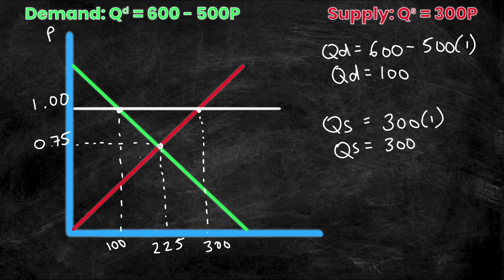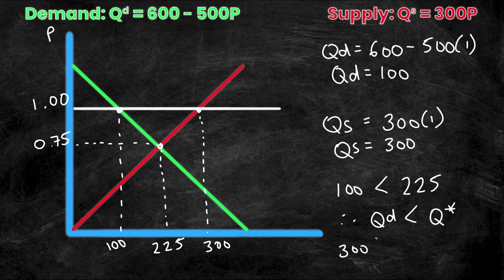Now what do we notice about this? Well, we notice that QD is strictly less than Q star. That is, in this scenario, we have a surplus and QD is 100 and Q star is 225. So it's an obvious statement that 100 is less than 225. Therefore, in this scenario, QD is less than Q star. At the same time, we notice that 300 is greater than 225. Therefore, QS is greater than Q star.